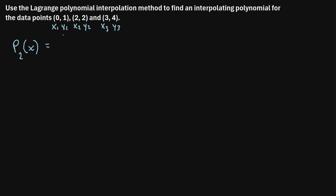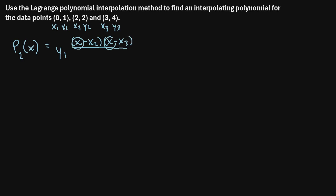Here's the formula we use to find the polynomial that goes through these points. We say y1, the very first y value, multiplied by a fraction. In the numerator, we take x minus all of the x values that are not x1 — so (x − x2) times (x − x3). Note these x's are variables, not data points. In the denominator, we take x1 minus all other x values: (x1 − x2) times (x1 − x3).